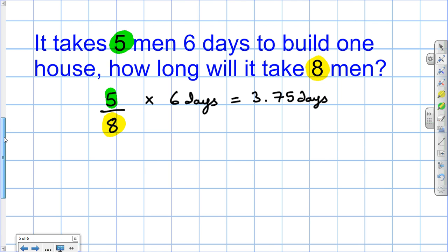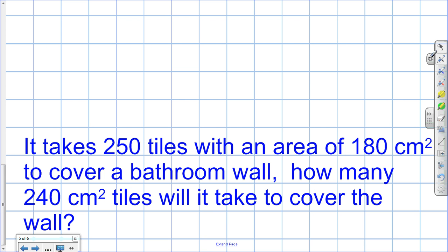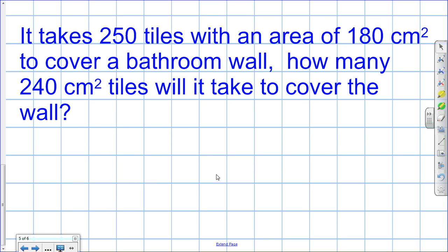Final look at indirect proportion. It does require us to think. It takes 250 tiles with an area of 180 cm² to cover a bathroom wall. How many 240 cm² tiles will it take to cover the wall? Now, will the number of tiles go up as the size, the area, goes up? Or will the number of tiles go down as the area goes down? If that's the case, it's direct proportion. Let's stop and think.